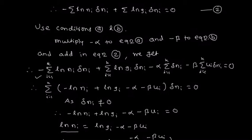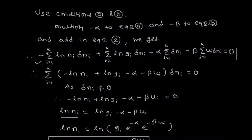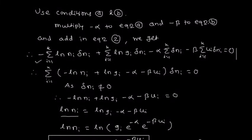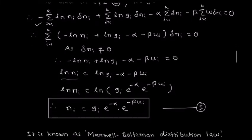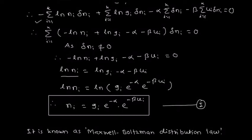The bracketed term equals 0 means: minus log(ni) plus log(gi) minus alpha minus beta·ui equals 0. Separating log(ni): log(ni) equals log(gi) minus alpha minus beta·ui. Taking the exponential of both sides, the minus alpha term becomes e^(minus alpha) and the beta·ui term becomes e^(minus beta·ui), therefore log(ni) equals log[gi · e^(minus alpha) · e^(minus beta·ui)]. Cancelling log on both sides we get: ni equals gi · e^(minus alpha) · e^(minus beta·ui).